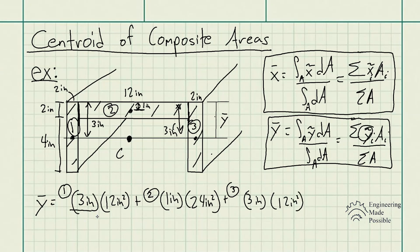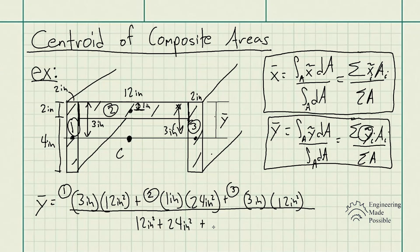Then we divide by the sum of all the areas. The cross-sectional area of rectangle one is 12 square inches, plus rectangle two is 24 square inches, plus another 12 square inches. Calculating that, we get Y-bar equal to two inches. This is the Y-bar we solved for — the centroid located with respect to the Y-axis of this composite area.